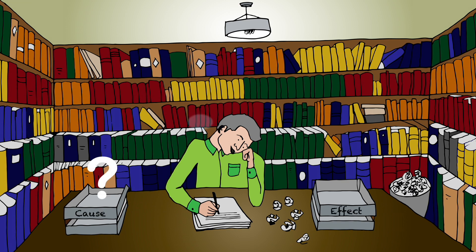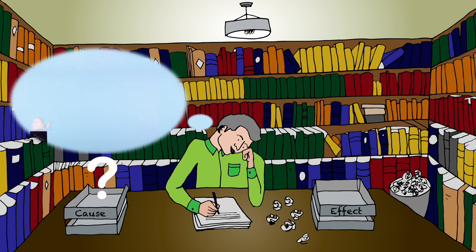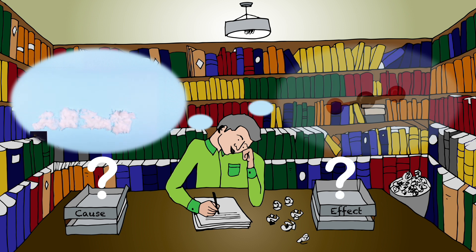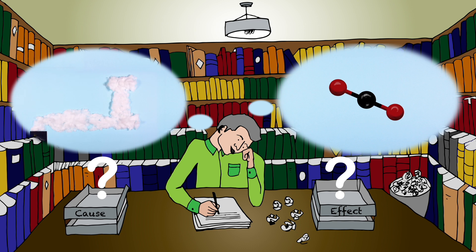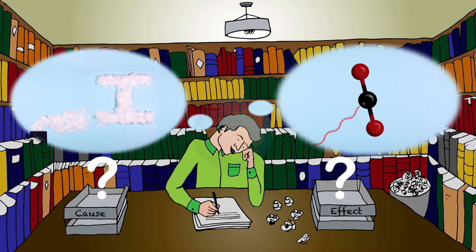Our climate system is complex to understand, and it is often difficult to separate cause and effect due to the complicated range of interconnected processes. However, we all expect that emitting carbon to the atmosphere has an effect on our climate.